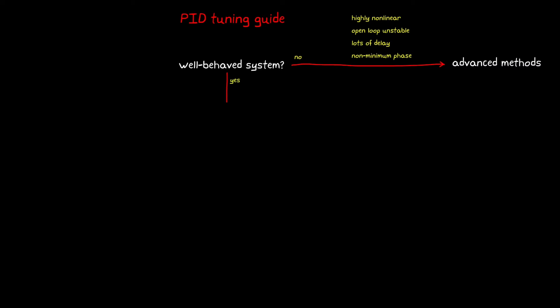These are systems that are stable, nearly linear, have minimum phase, and a manageable amount of delay. From here, we have two general situations. First, let's say that you're given a model of your system.